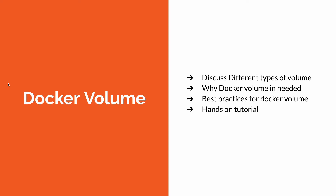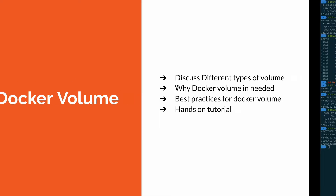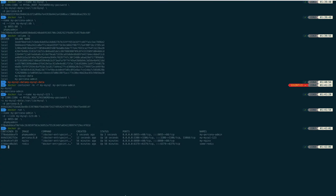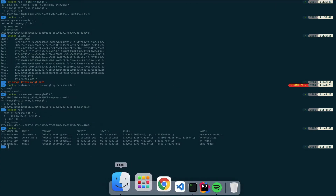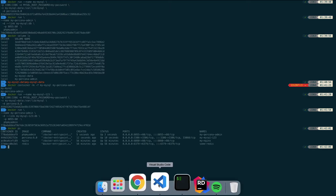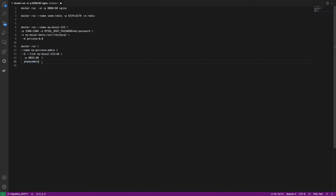We already understand how to use persistent volumes and persistent data in Docker. Now I will show you how you can use a volume for website-type data or any configuration data — if that data is lost, you can recover it. For this type of practice, I need to create a VS Code project.